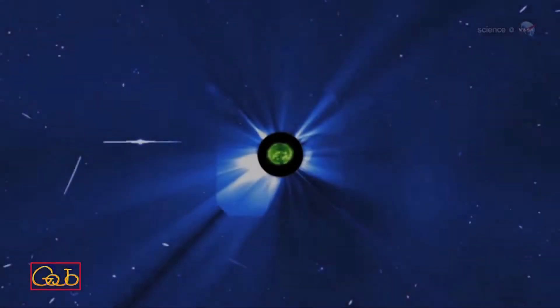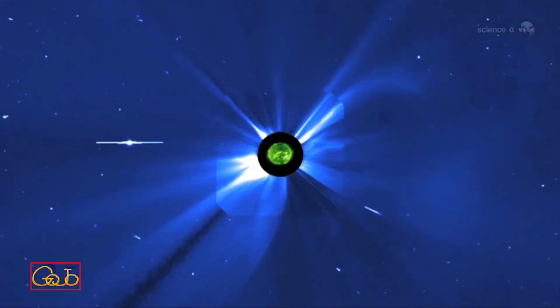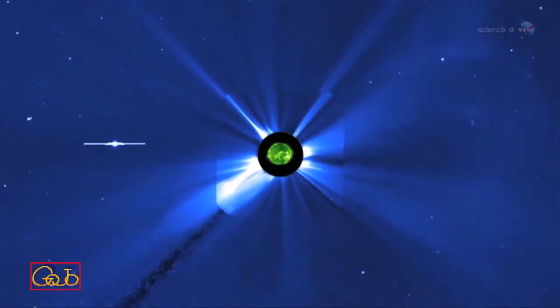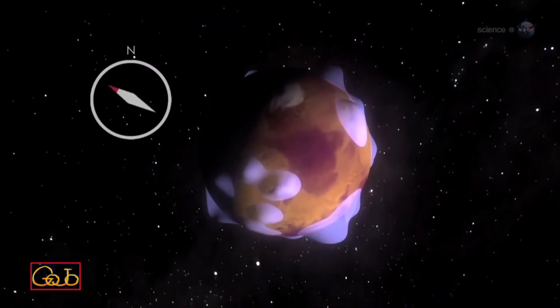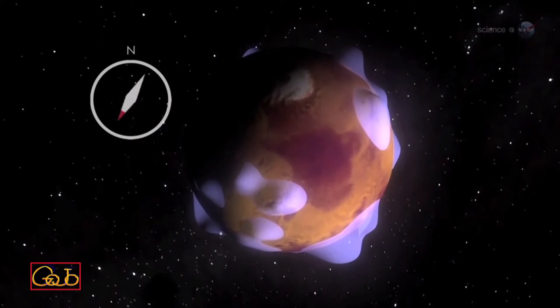One possibility is the solar wind. Unlike Earth, Mars is not protected by a global magnetic field. Instead, it has magnetic umbrellas scattered around the planet that shelter only part of the atmosphere.